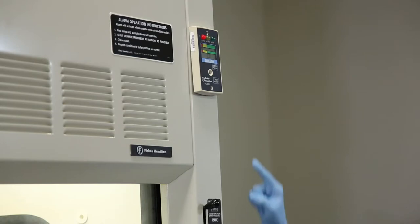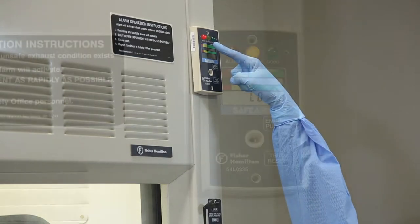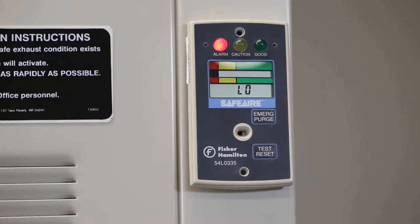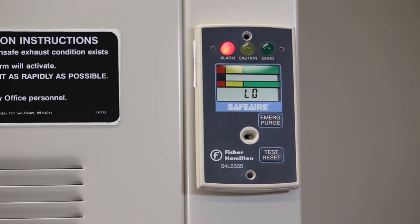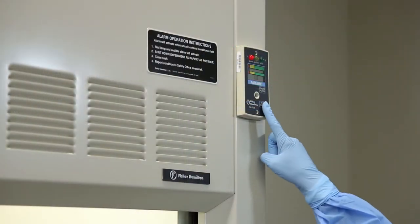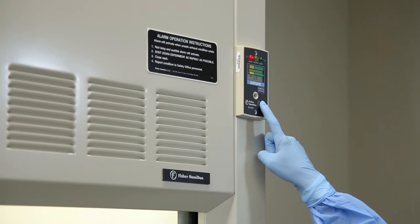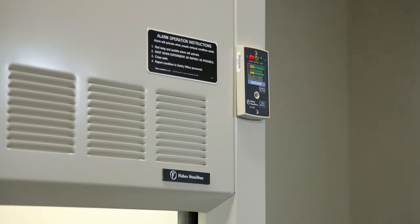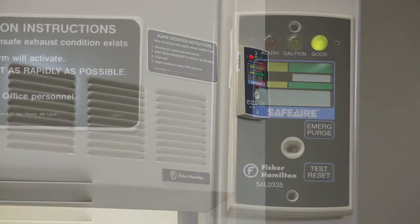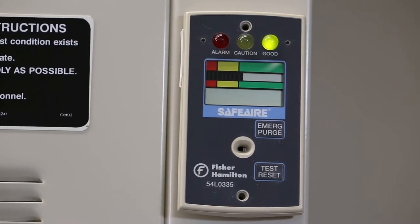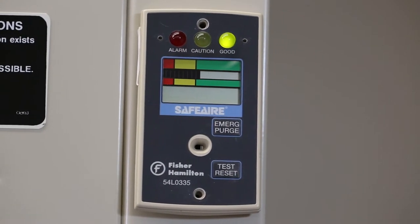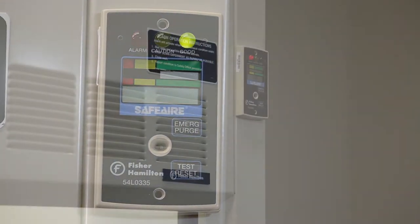The low airflow alarm in many fume hood models has an audible feature as well as the visual notification. The audible alarm can often be disabled, however, it can be reset. Keeping the alarm in an audible mode is a good work practice to ensure the user will realize there is a problem.